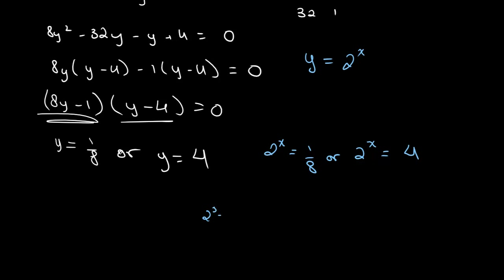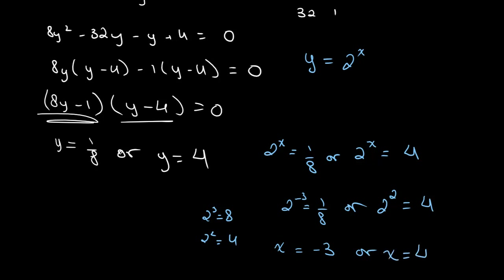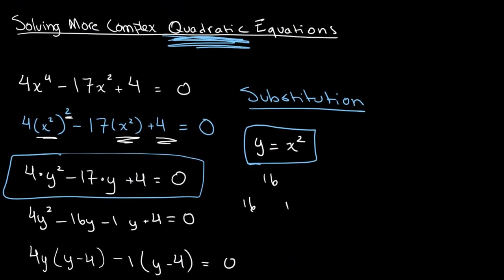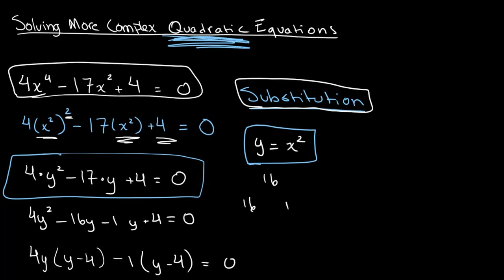Plugging back in: 2 to the power of x equals 1 over 8, or 2 to the power of x equals 4. We know 2 cubed equals 8, so 2 to the negative 3 equals 1 over 8, and 2 squared equals 4. Therefore x equals negative 3 or x equals 2. In all these examples, we used substitution to turn the initial equation into a quadratic equation which we then solved easily. The main challenge is finding the correct substitution, so practicing more problems will help you get comfortable with it.